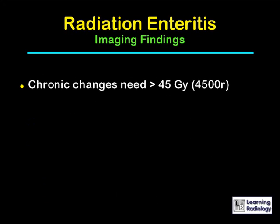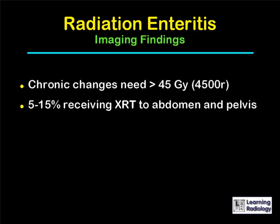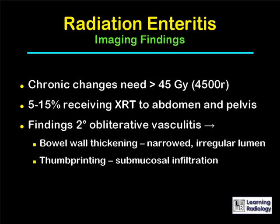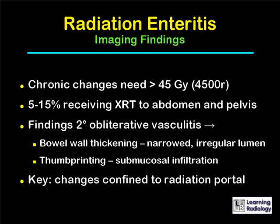For chronic changes, usually 45 gray or greater than 4,500 rads are needed. About 5 to 15 percent of patients receiving x-ray therapy to the abdomen and pelvis will develop some symptoms of radiation enteritis. The findings are secondary to an obliterative vasculitis, which leads to bowel wall thickening, narrowing, and irregularity of the lumen, sometimes thumbprinting due to submucosal infiltration. The key to the diagnosis is that the changes are confined to a prior radiation portal.